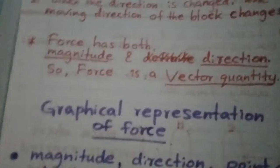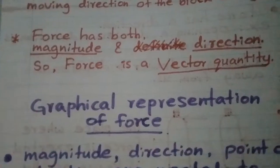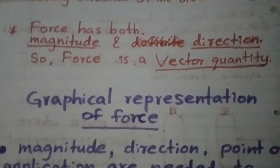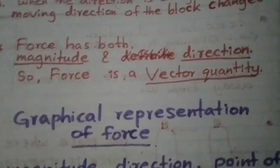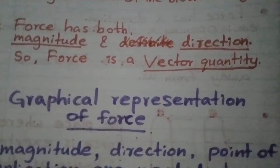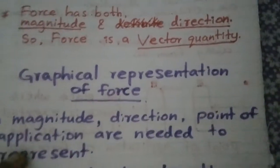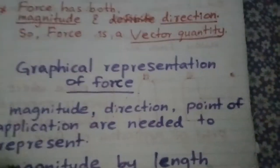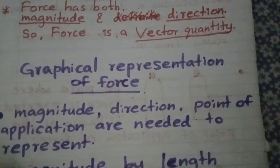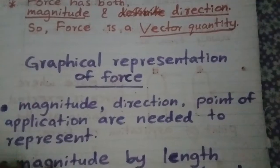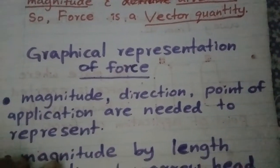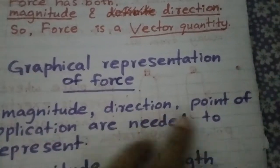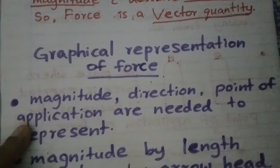Now, how do you represent a force in your textbook? This is called the graphical representation of a force. To represent a force graphically, you need to show three characteristics: magnitude, direction, and the point of application.